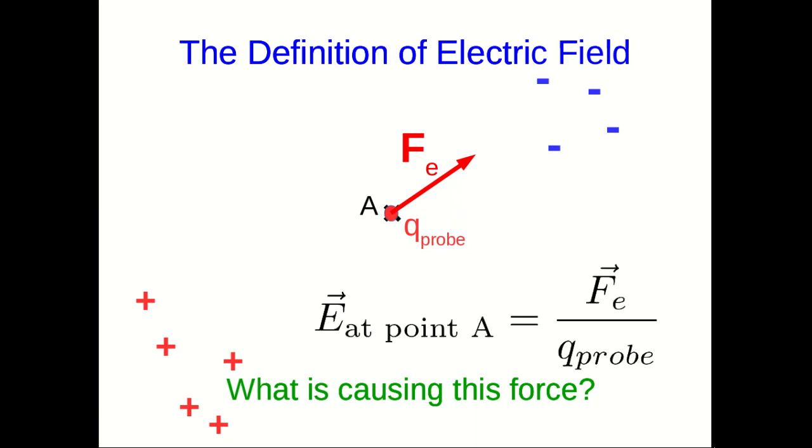So instead we define this thing that we call the electric field. And this is now a property of the point a. So we say that the electric field at point a is the measured electrical force on our probe charge divided by the amount of charge on the probe charge. And what this now allows us to do is say that attached to the point a, or associated with it, is this field vector e, which is a property of the point a. It doesn't in any way depend on the probe charge. It's a property of the point in space.